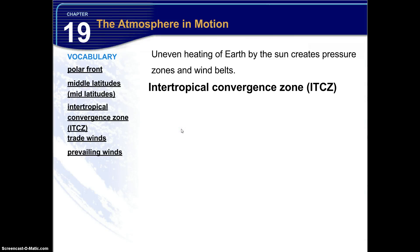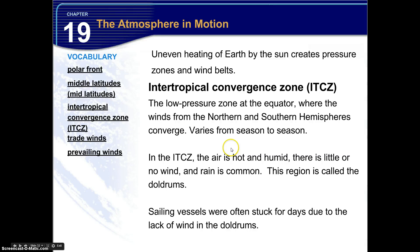Now uneven heating of earth by the sun creates pressure zones and wind belts. We have something called the Intratropical Convergence Zone, ITCZ, which is one of those wind belts. Now this low pressure zone at the equator, where the winds from the northern and southern hemispheres converge, varies from season to season. In the ITCZ, the air is hot and humid, and there is little or no wind and rain is common. But this region is called the doldrums. Sailing vessels were often stuck for days due to the lack of wind in these doldrums.